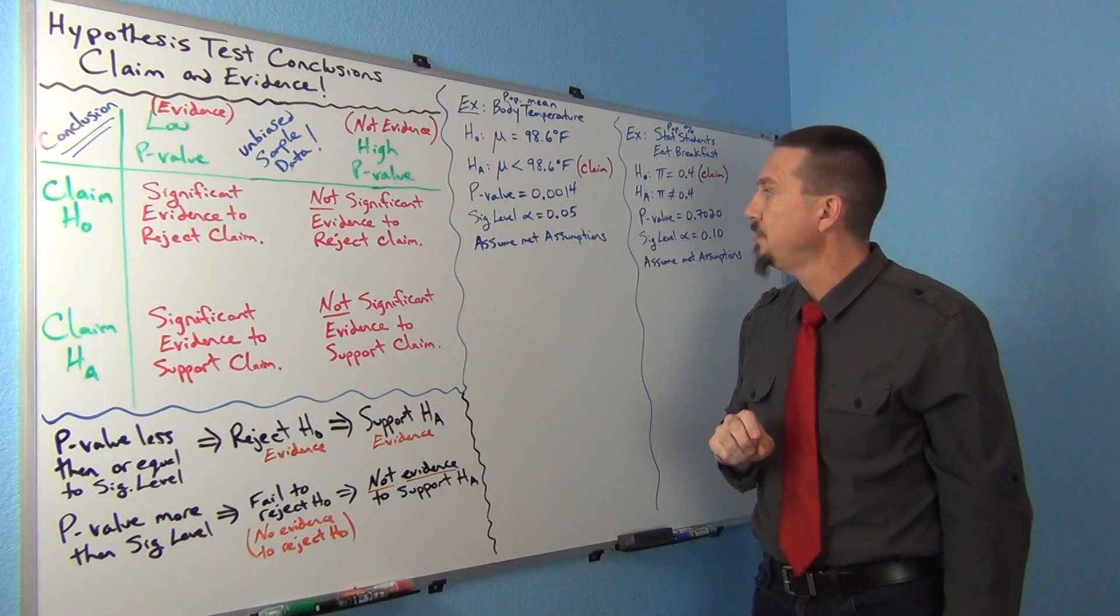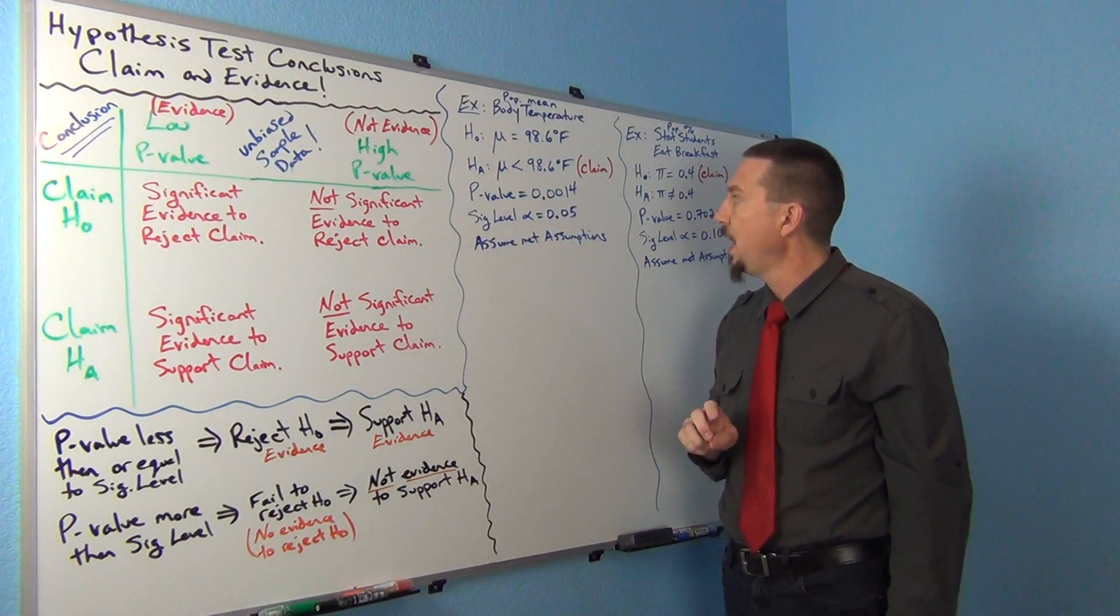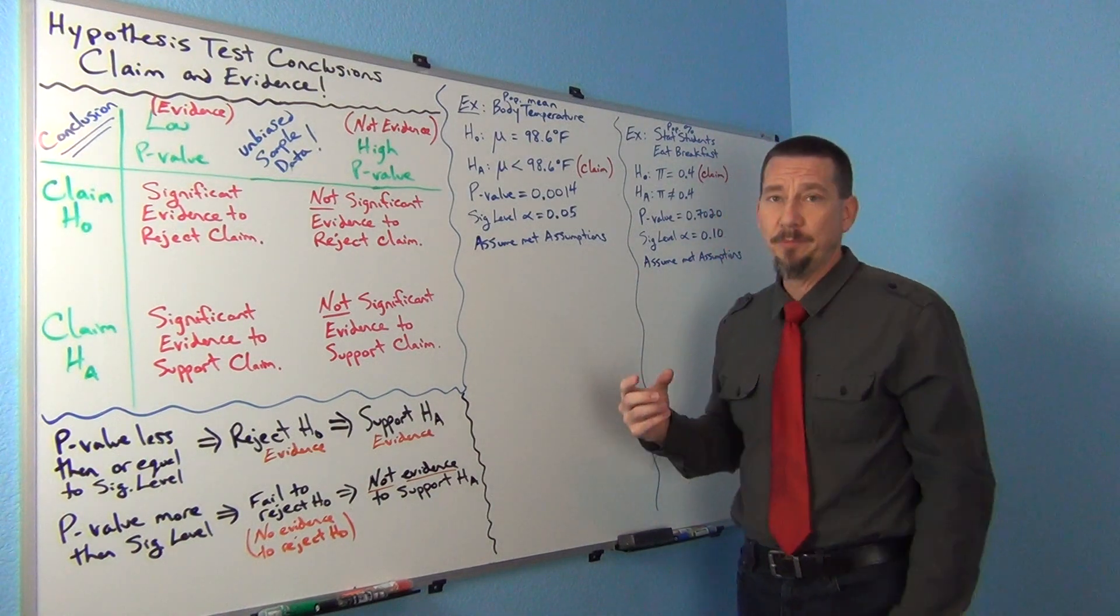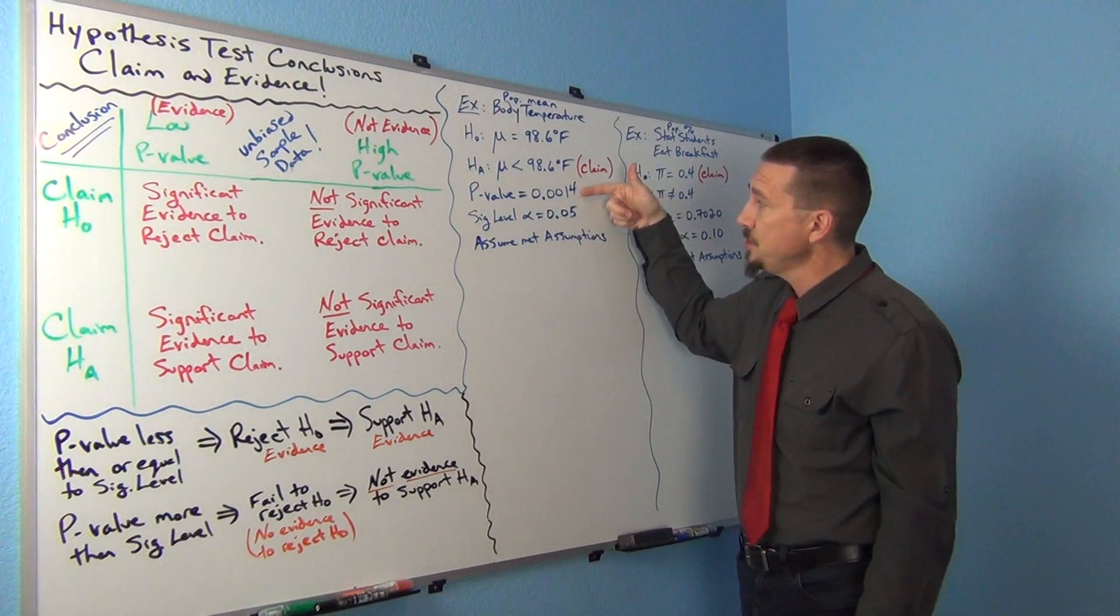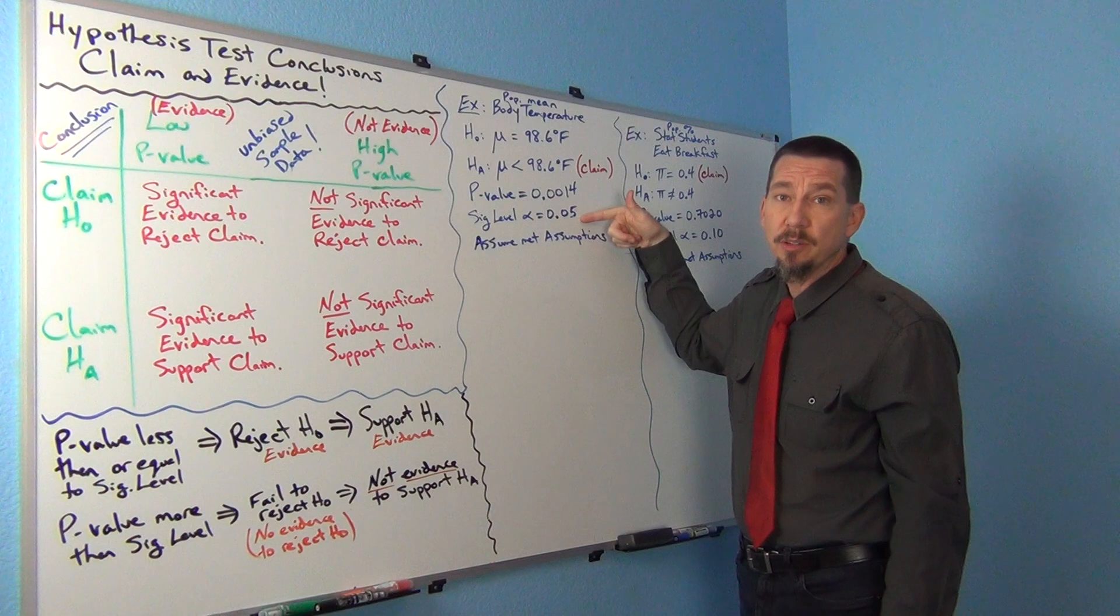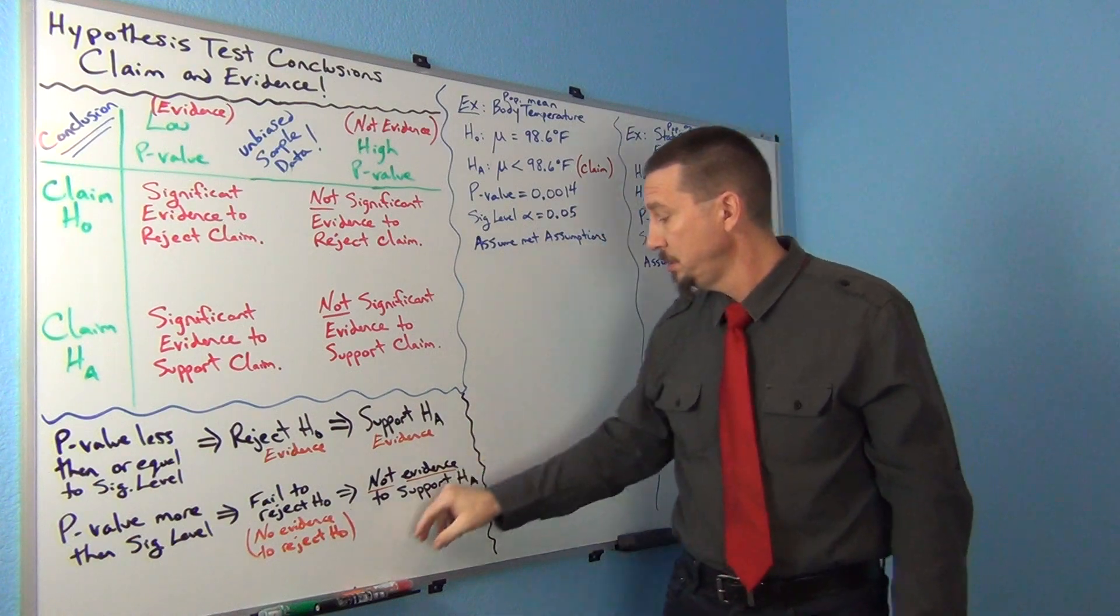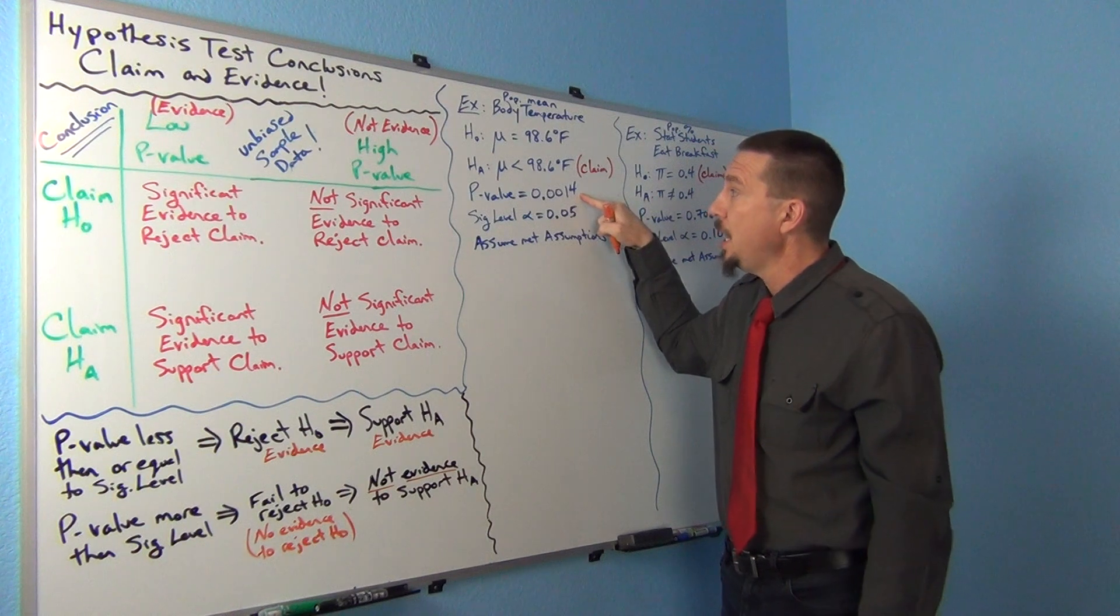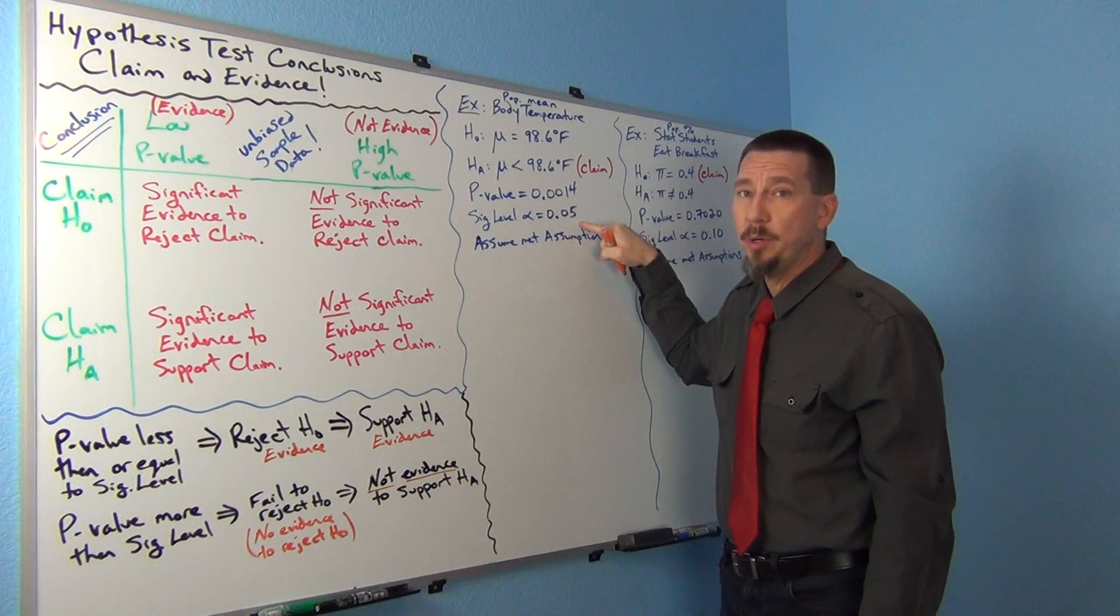And significance level alpha was 0.05. So the question is, is this a low p-value or is this a high p-value? Well, you can see 0.0014 p-value is definitely lower than the 0.05 significance level. So 0.0014 p-value is lower than 0.05.